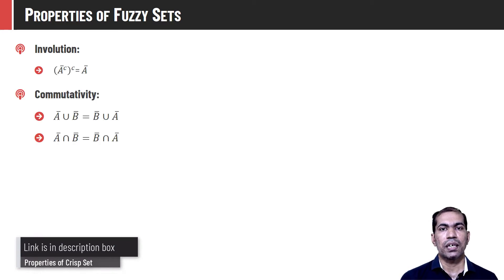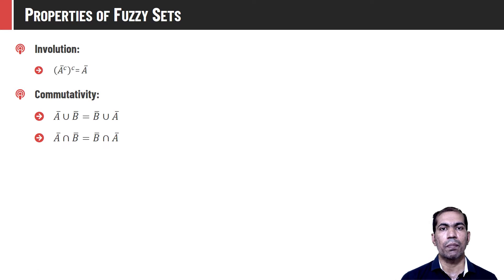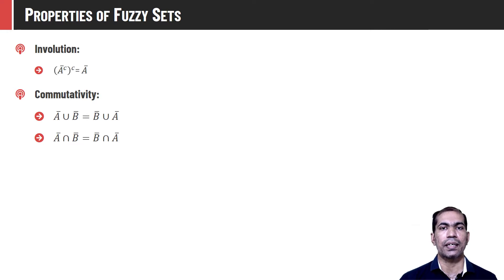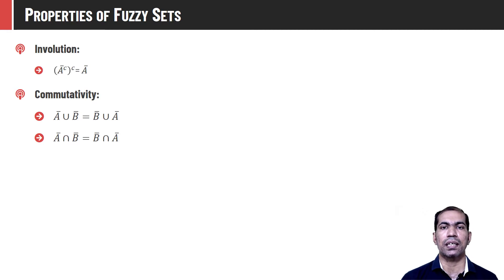Fuzzy sets also hold the property of commutativity — that is, A union B is the same as B union A, and this is also true for intersection: A intersection B is the same as B intersection A.